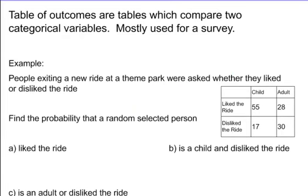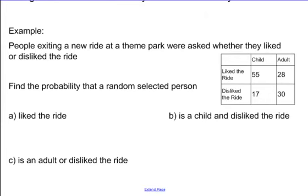Tables of outcomes are great for surveys or things of that nature where people want to see what's the difference between maybe adults or kids, or females to males. It's very interesting to see how different groups can think, and having a table to gather your data can help sort it a lot easier.